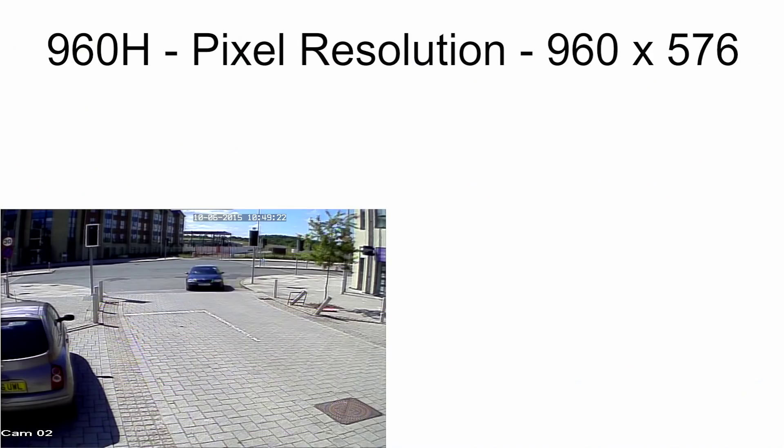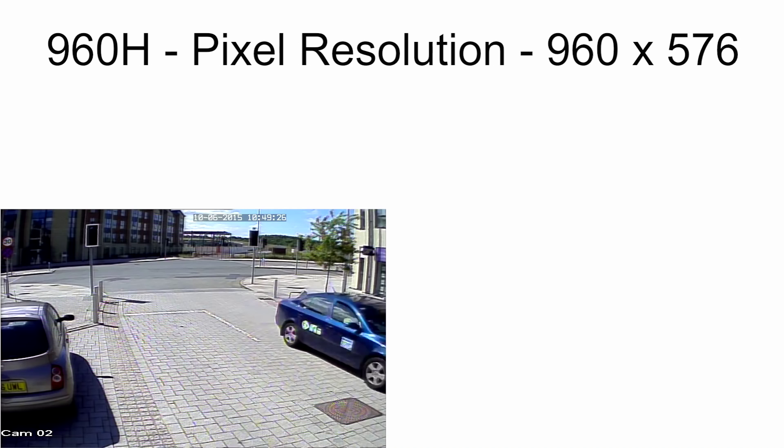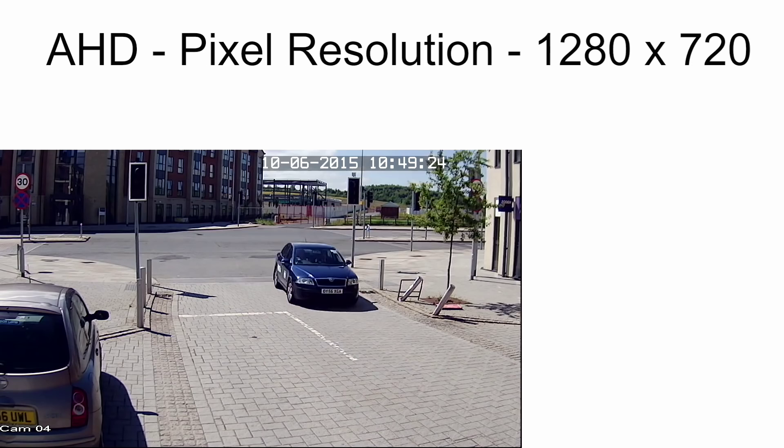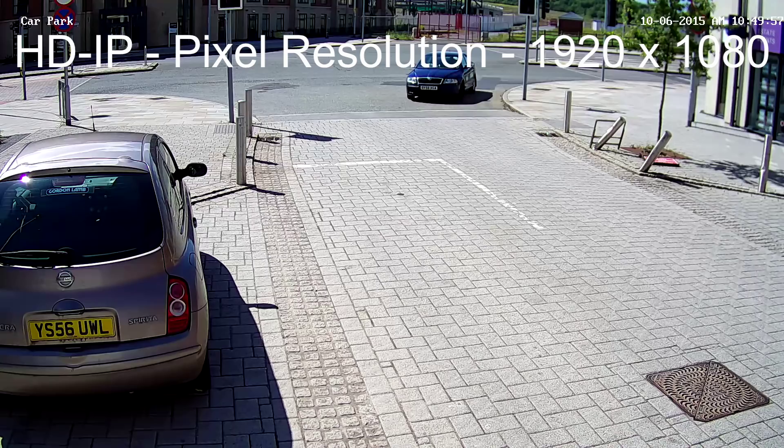Here we show the actual pixel resolution that each system records at. 960H is 960 by 576 — this is a quarter of full HD resolution. AHD is 1280 by 720, which is less than half of full HD resolution. And finally, this is full HD resolution: 1920 by 1080 pixels.